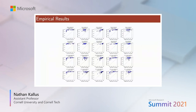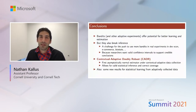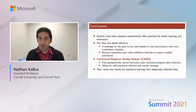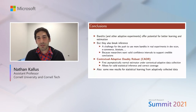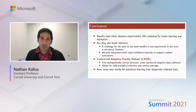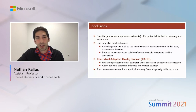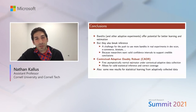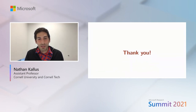To recap: bandit algorithms offer improvements over non-adaptive experimentation and are appealing in many applied fields. But in those same fields we also want to run inference at the end — not just collect reward, but learn something and support credible conclusions. The problem is that bandit algorithms break statistical inference. To solve this, I presented the CUTTER estimator, the first asymptotically normal estimator under contextual adaptive data collection, which allows valid statistical inference and guarantees correct coverage.